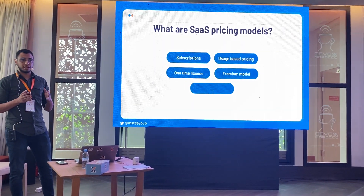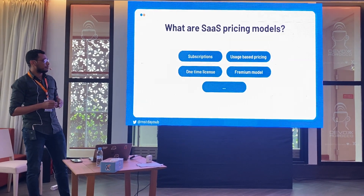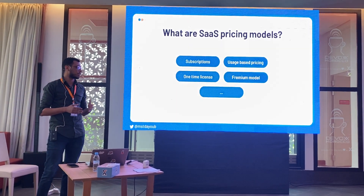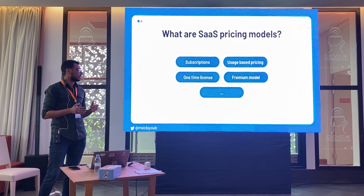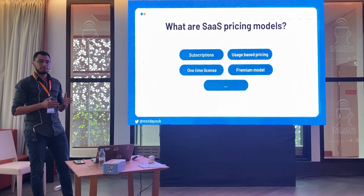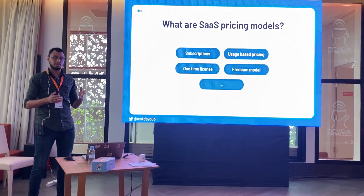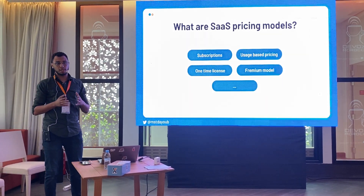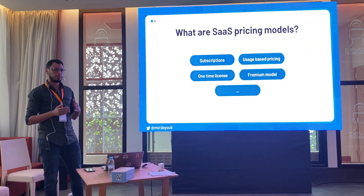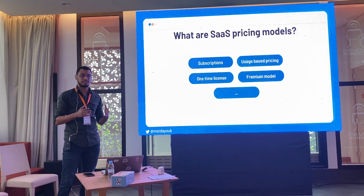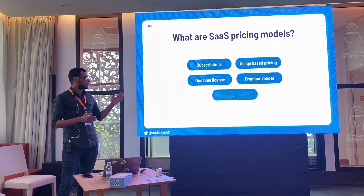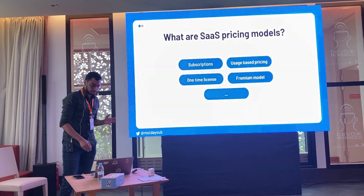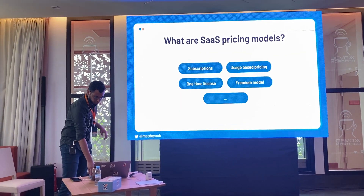For SaaS revenue models or pricing models, there are multiple options. There is the subscription model billed periodically, the usage-based or pay-as-you-go model, the one-time license model where users pay once for the software, and the freemium model where we offer a free plan with some features. Those are the principal revenue models for SaaS.